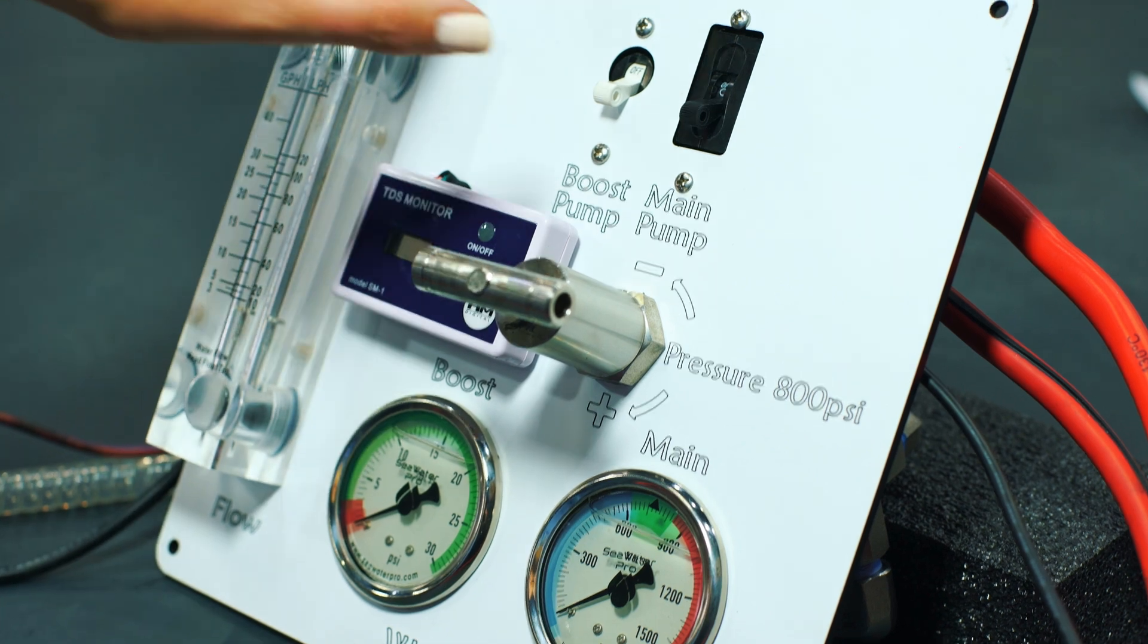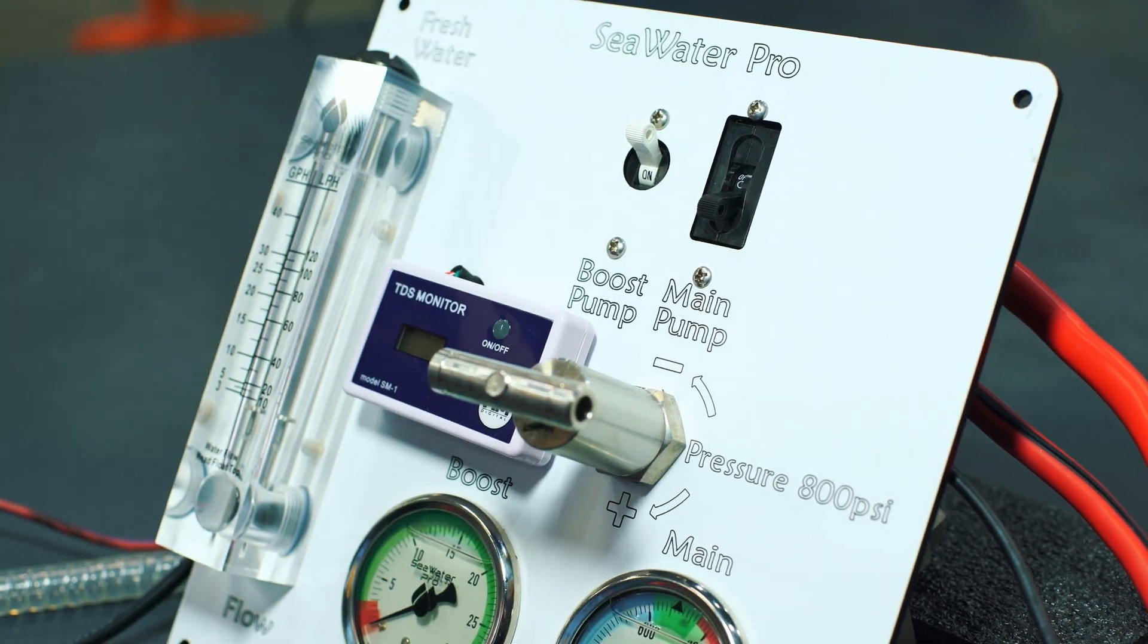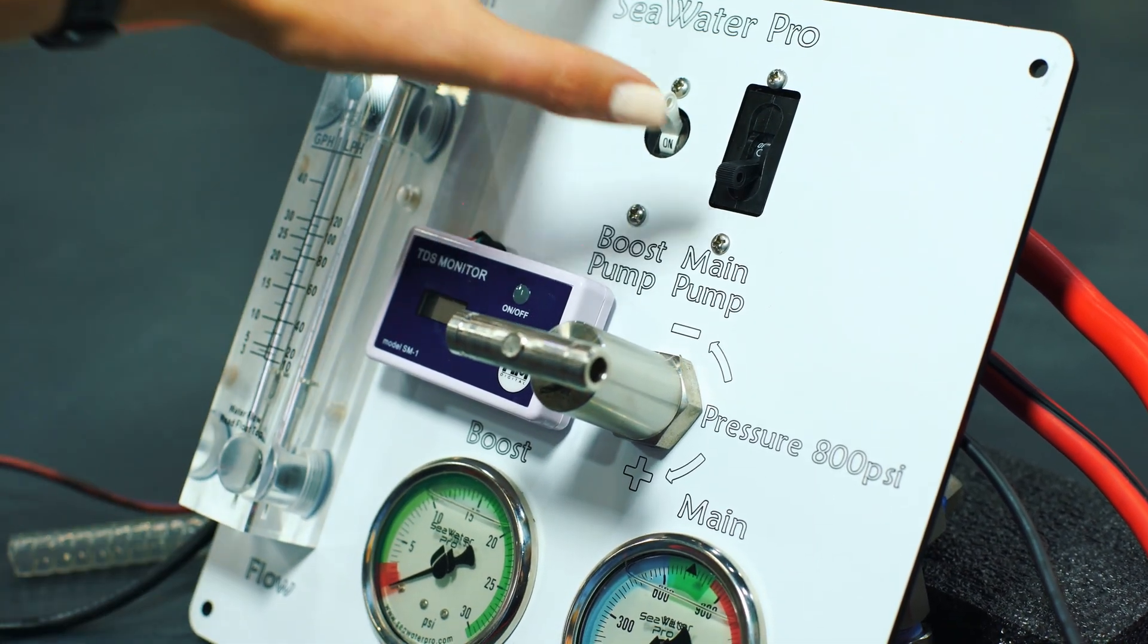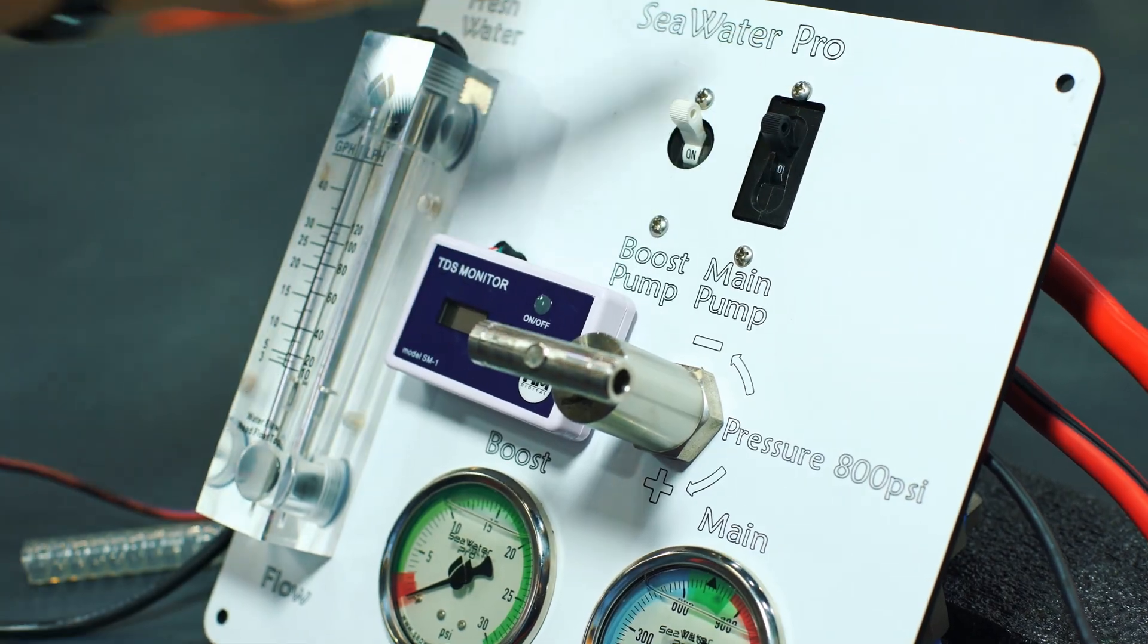To turn on your water maker, start by priming the system by switching on the boost pump breaker first, followed by the main pump shortly after.